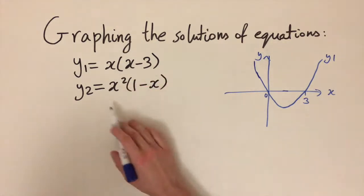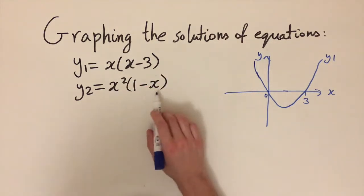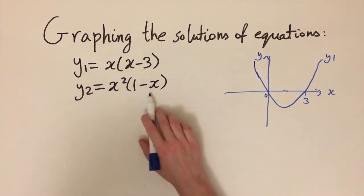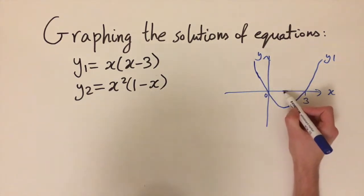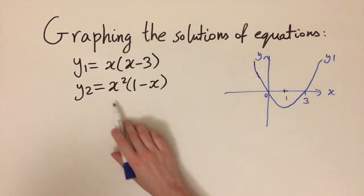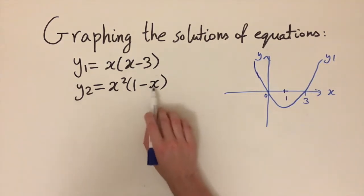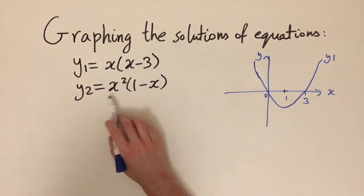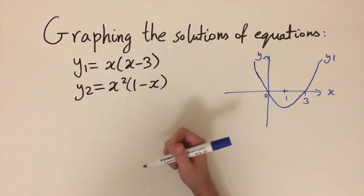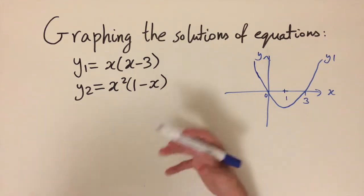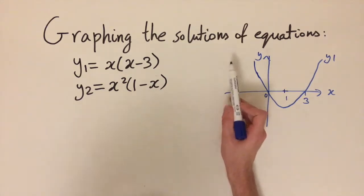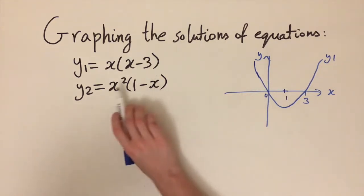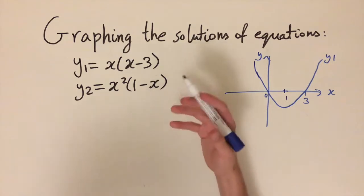Next we want to sketch the cubic equation. The roots are when x equals 0 and x equals 1. We also need to note there's a negative x term, so if we expand everything out we get a negative x cubed term, which means the cubic is going to be upside down — starting in the top left corner and ending in the bottom right.